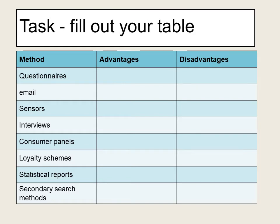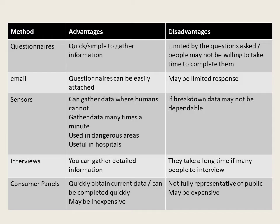All we're going to do is identify one advantage and one disadvantage for each. Questionnaires: they are quick and simple to gather information from. However, the disadvantage is that people might not be willing to fill them in or take time to fill them in. Emails: questionnaires can be easily attached to the email, but again there might be limited response and the emails might get lost. Sensors: they can gather data where humans cannot, they can be quite useful in hospitals and in dangerous areas to collect data. However, if the technology breaks down then they become not very dependable.